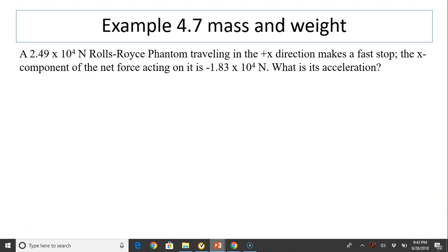Let's take a look at another example. A 2.49 times 10 to the 4 Newton Rolls-Royce Phantom traveling in the positive X direction makes a fast stop. The X component of the net force acting on it is negative 1.83 times 10 to the 4 Newtons. What is its acceleration? To find acceleration, we use Newton's second law. Acceleration equals net force divided by mass. We know the net force, but we don't know the mass. But since we know the weight of the car, we can find mass through its weight.